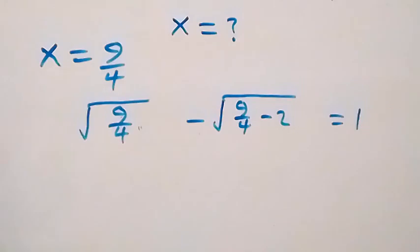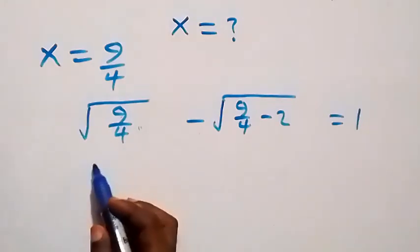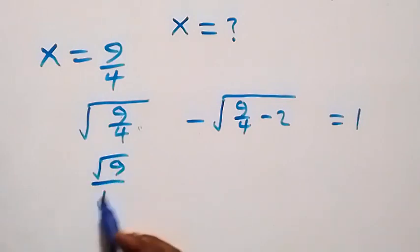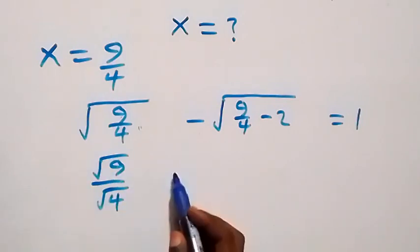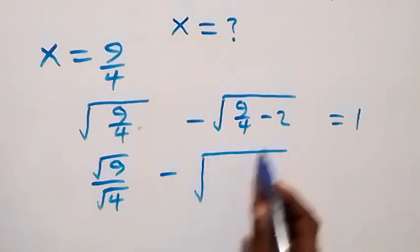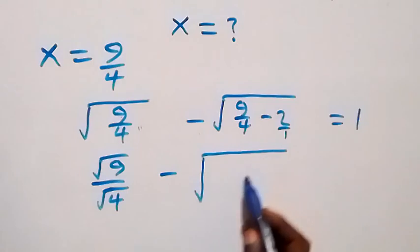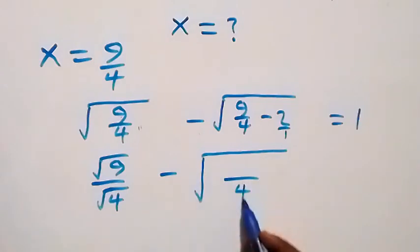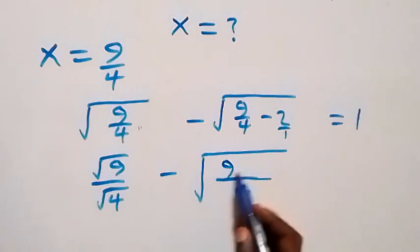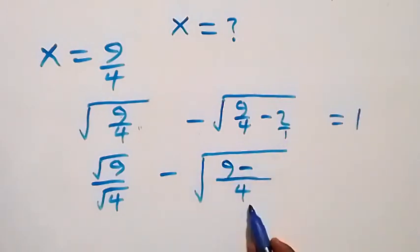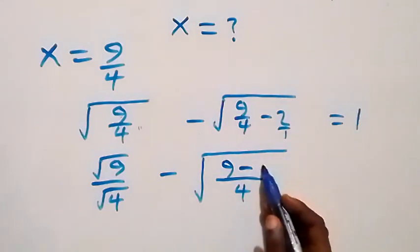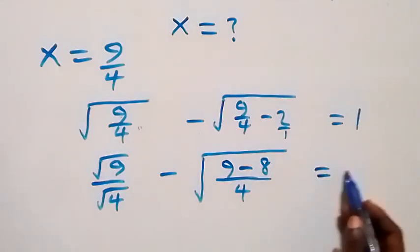This is the same as writing √9 over √4, we can separate this. Then minus — we can bring this fraction together with common denominator 4. We have 4 into 4 that's 1, 1 times 9, that's 9, then minus also 1 into 4, that's 4, and 4 times 2, that's 8. So it becomes √(9/4) minus √(1/4), will it equal 1?